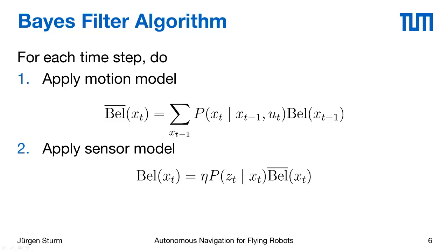As you may remember, we had a denominator where we had to divide by the prior on sensor measurements, which was hard to compute. Instead, we typically add a normalization constant that we compute afterwards by making sure the belief distribution is a proper distribution — meaning it has to sum to 1. It should also be noted that the Bayes filter works on continuous states; in that case you simply replace the sum in this equation with an integral.